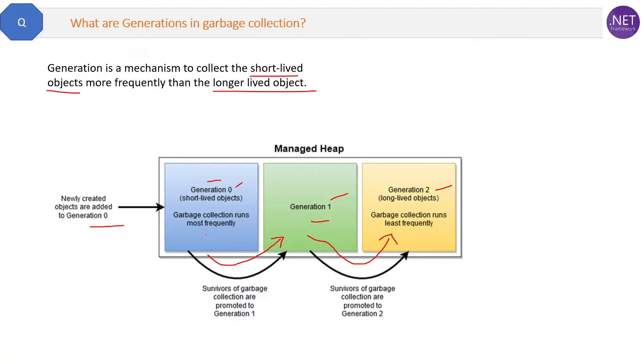So the same thing will happen with Generation 0. If the objects are not used, the garbage collector will dispose of them. If they are in use, it will move them to Generation 1. Then again, if the objects in Generation 1 are in use, it will move them to Generation 2. If not in use, the garbage collector will dispose of them.